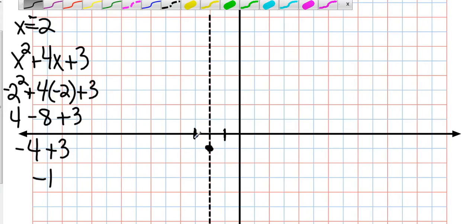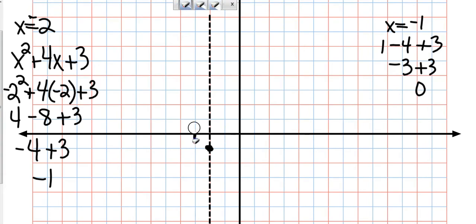So I'm going to take negative 1 and plug it into my equation. So that's going to be negative 1 squared which is 1 plus 4 times negative 1 which is minus 4 and then plus 3. So 1 minus 4 is negative 3. Negative 3 plus 3 is 0. So that's actually going to be at negative 1, 0.